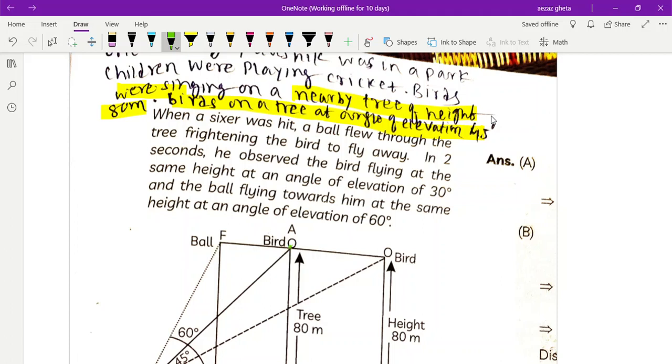When Kaushik hit the six, the birds got scared and they fly away. In two seconds he observed the bird flying at the same height. The elevation became 30 degrees. They have traveled far like this, and the ball flying towards him at the same height and angle of elevation. The figure was given.